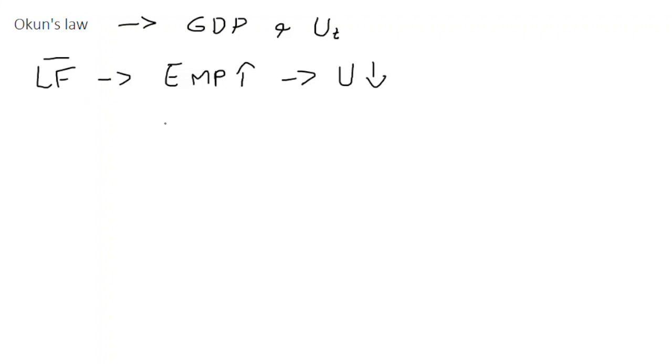In practice what we tend to find is an empirical relationship. We say that the change in unemployment in the economy is equal to a constant term alpha minus a beta coefficient times the percentage change in real GDP.